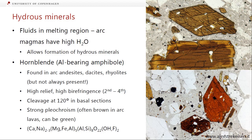Hornblende has strong pleochroism; in plane-polarised light it's often brown, and can be green sometimes, particularly in metamorphic rocks. It's often referred to as a dumpster mineral or rubbish bin because it just takes a little bit of everything — calcium, sodium, magnesium, iron, aluminium, silicon, hydroxide or fluorine. In reality the solid solutions it can have are even more complicated, so we can have even more elements in there.